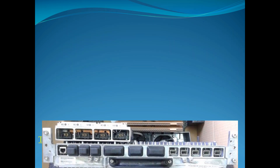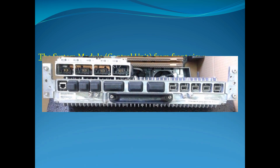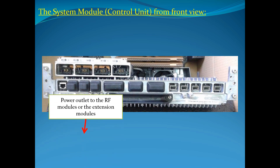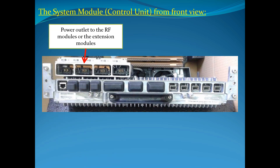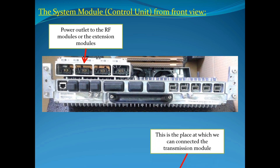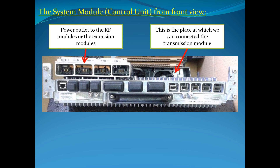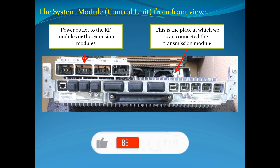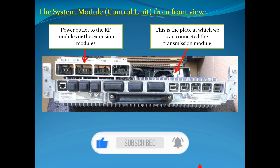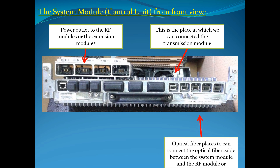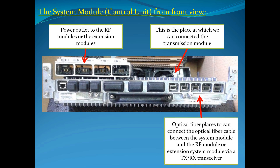The System Module — Control Unit from Front View. Power Outlet to the RF Modules or the Extension Modules. This is the place at which we can connect the Transmission Module. Optical Fiber places where we can connect the Optical Fiber Cable between the System Module and the RF Module or Extension System Module via a DX/Rx Transceiver.